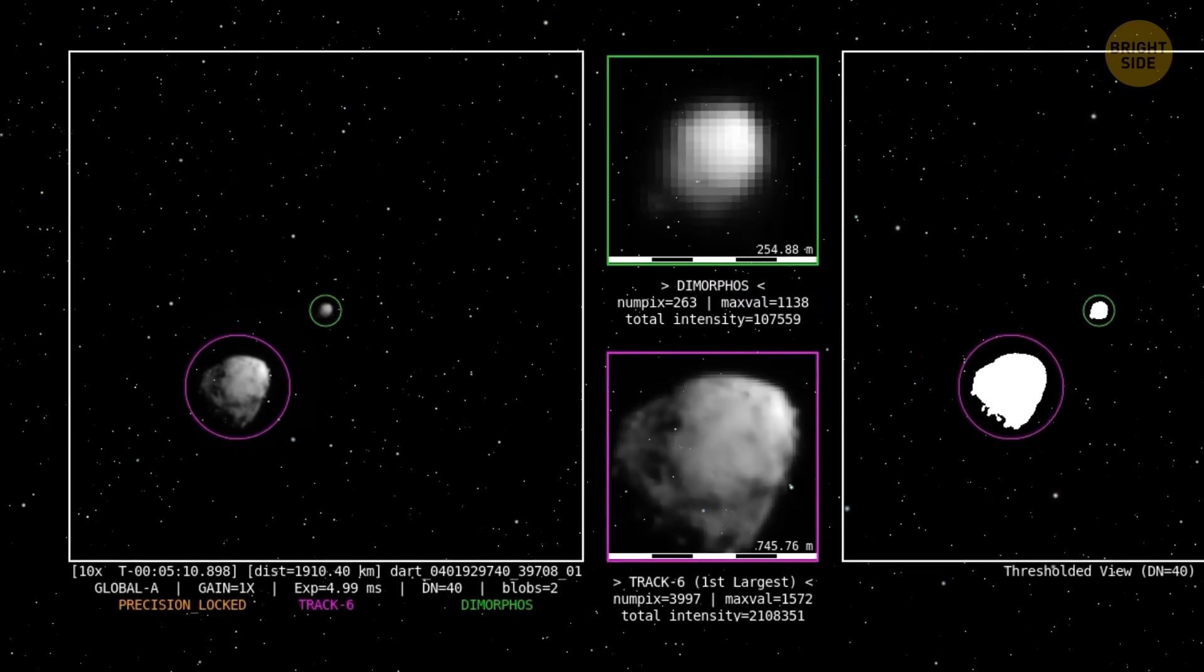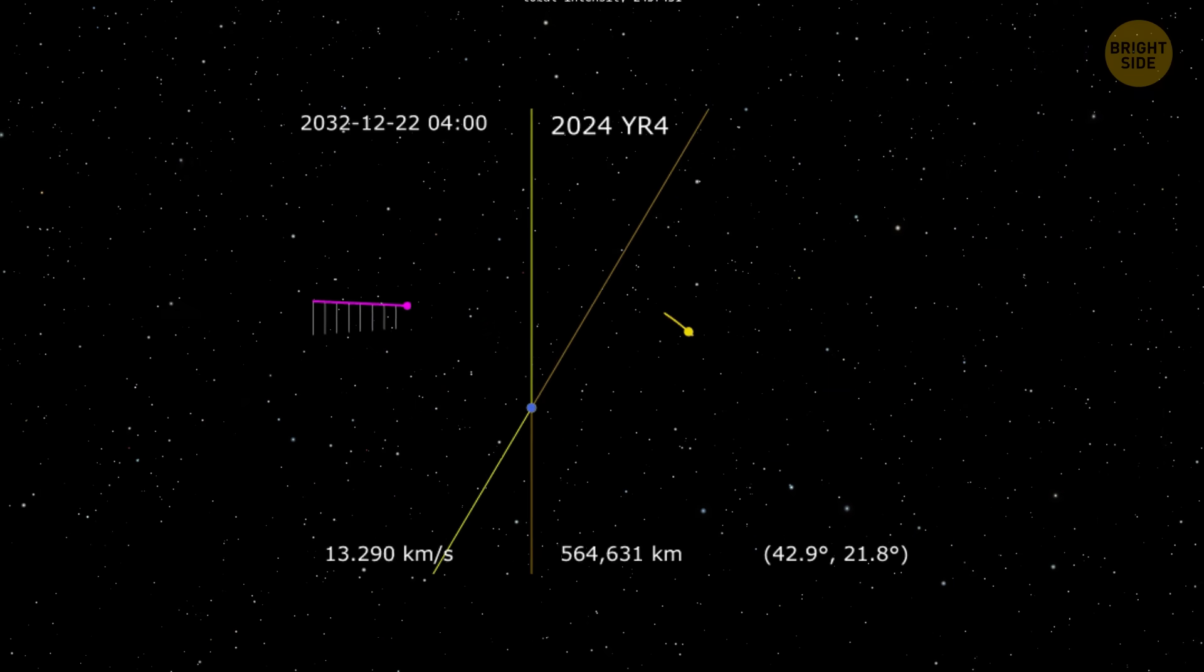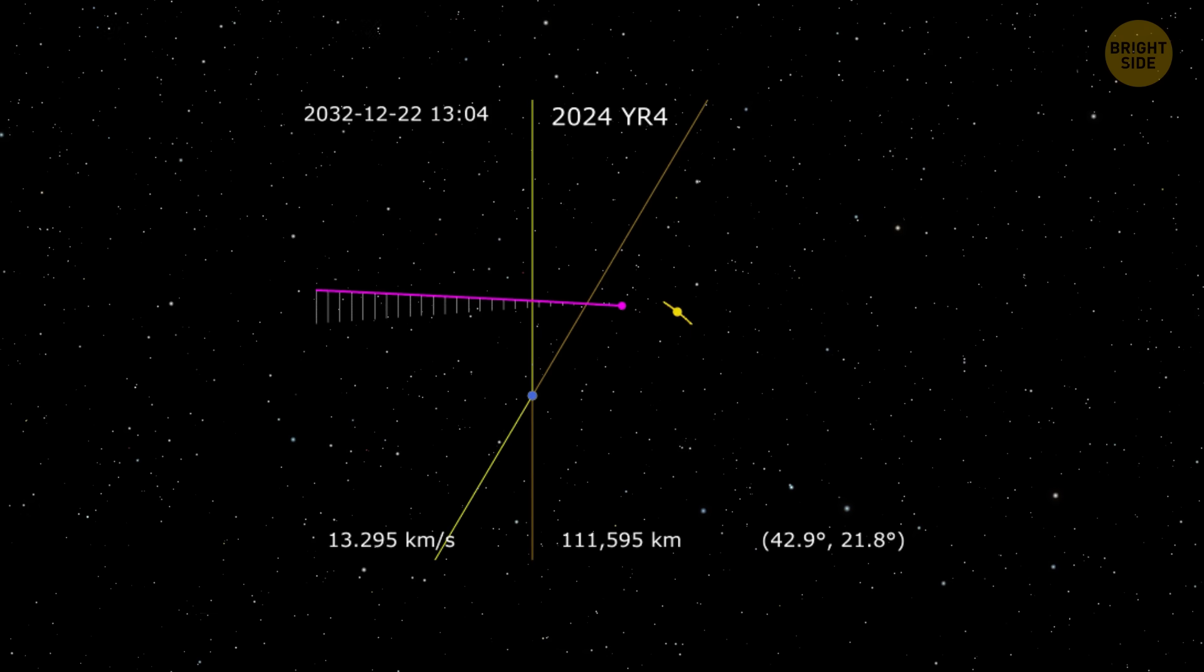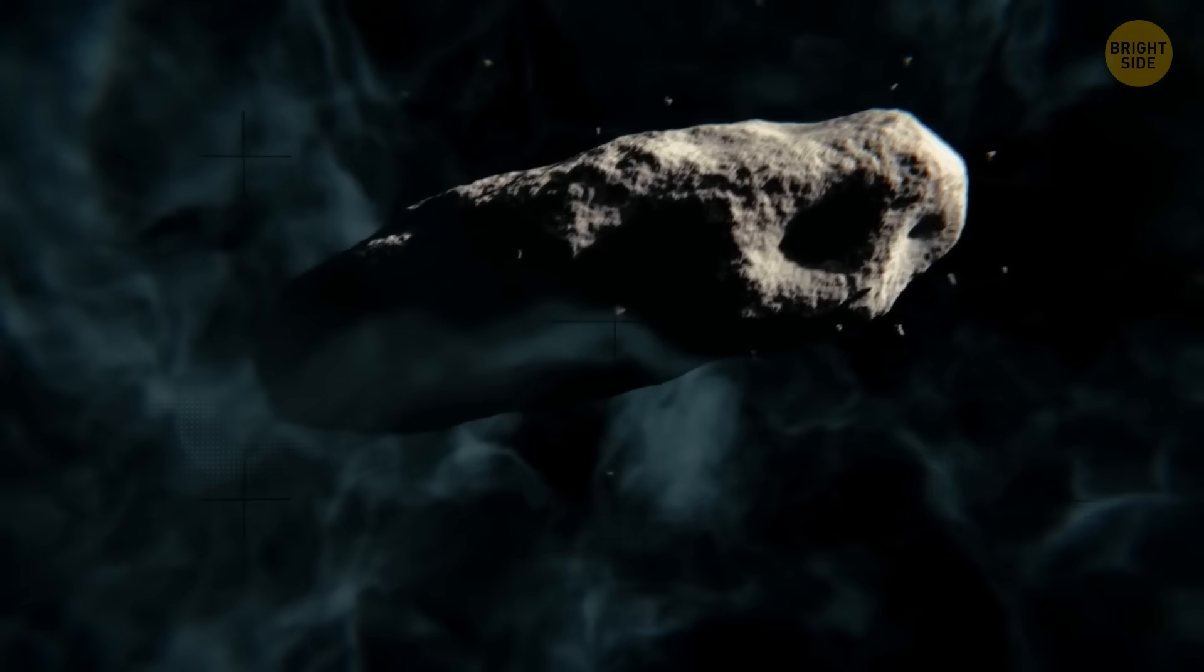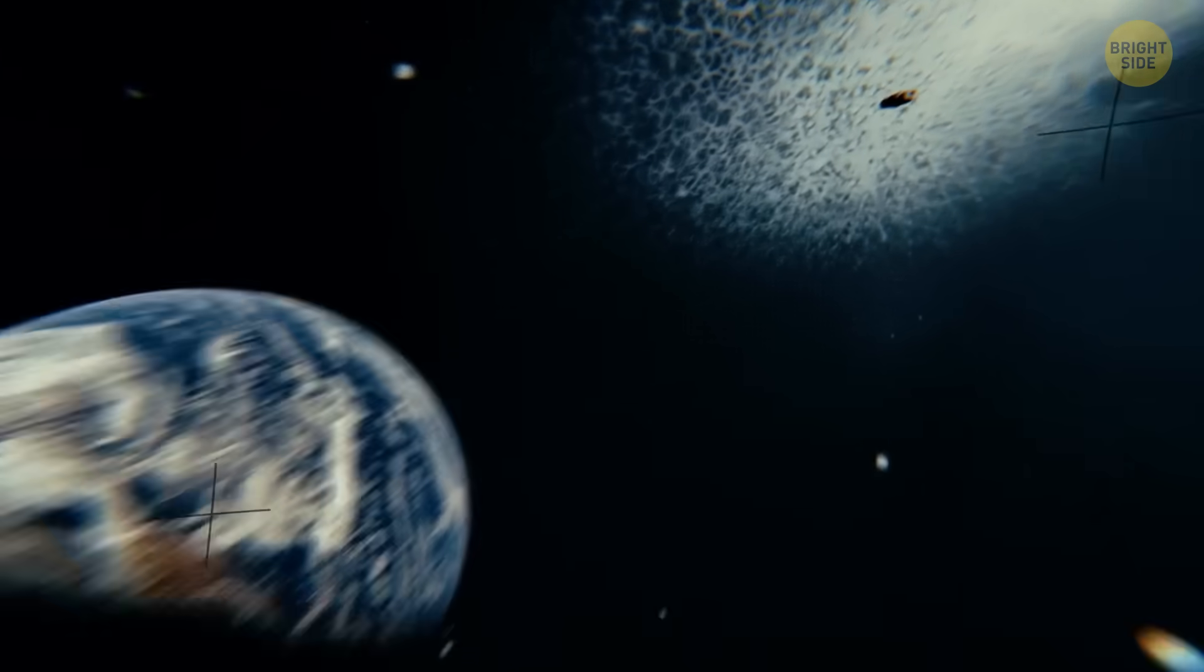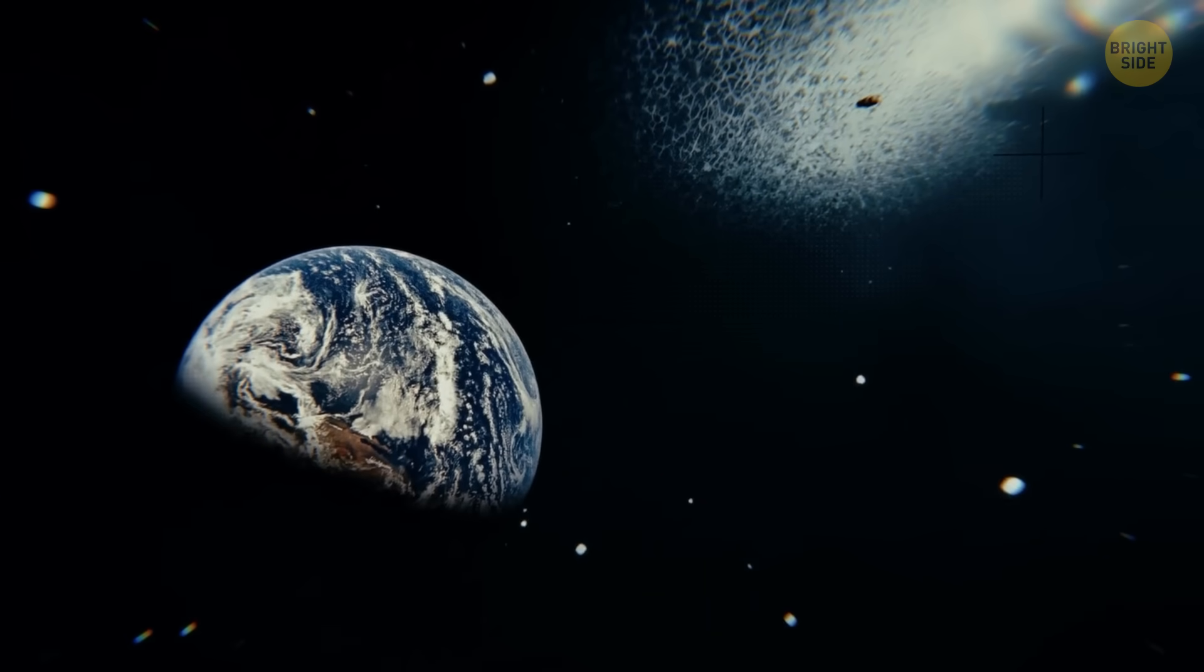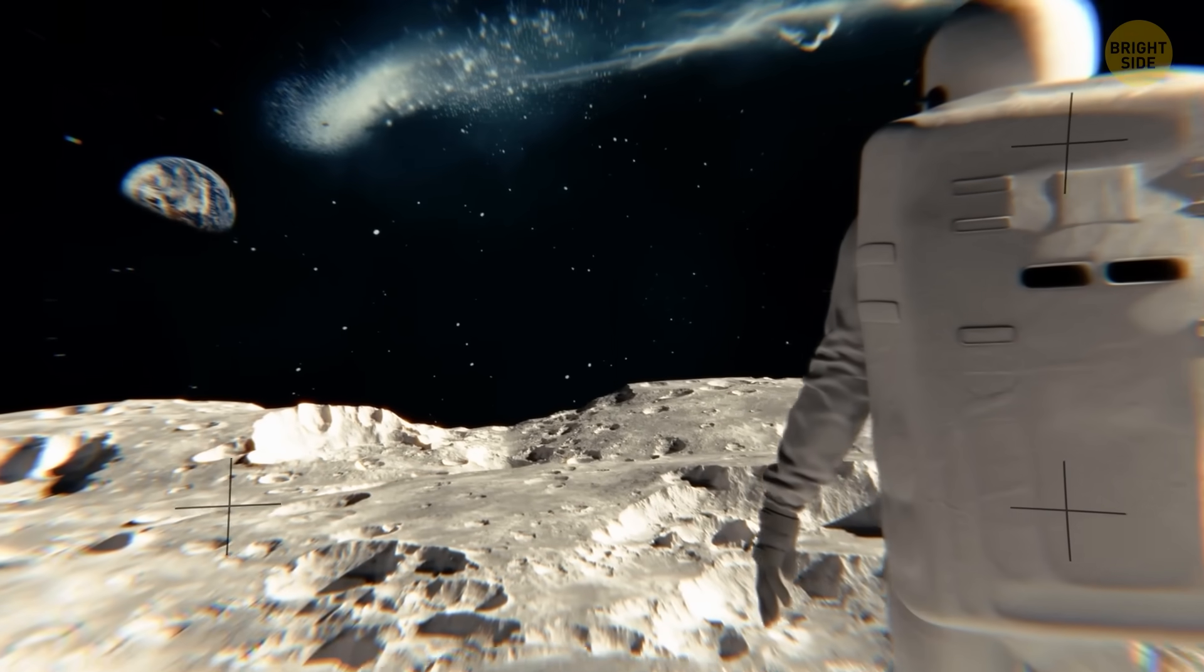Think of it as a cosmic lottery that has been running for billions of years. Every once in a very long while, the universe draws a number that makes astronomers sit up and pay attention. It's not a reason to panic. It's a reason to build better eyes in space and make sure that if a bad ticket ever comes up, we see it in time to do something about it.